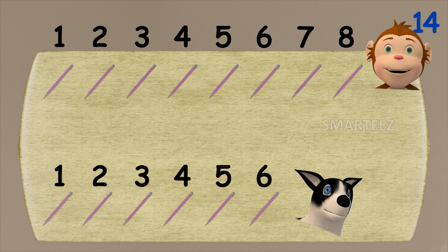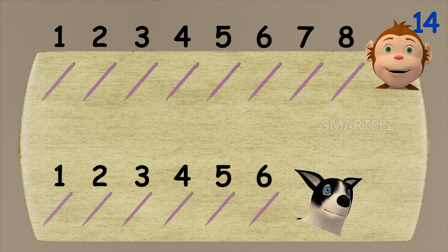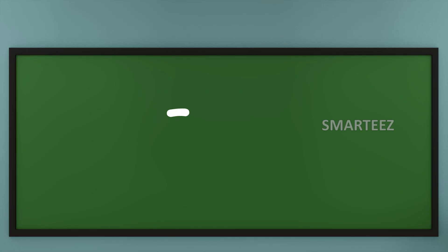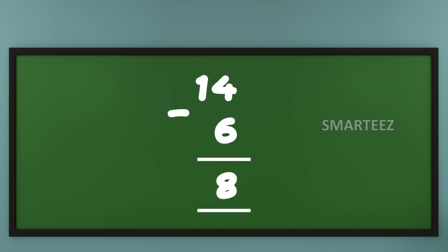When we gave six pencils to Byra after fourteen, we have eight pencils left for Rangu. By now you already know, that's what we call subtraction. Here we say, when we subtract six from a total of fourteen, we get eight remaining. Removing or reducing is called subtraction.